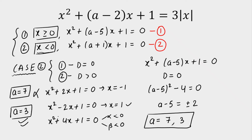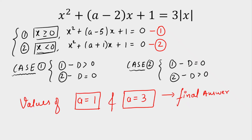In conclusion, from Case 1 we got A equals 1, and from Case 2 we got A equals 3. Only these two values give exactly three real and distinct roots for the original equation.